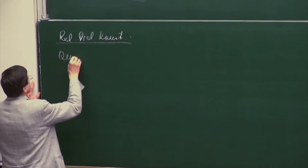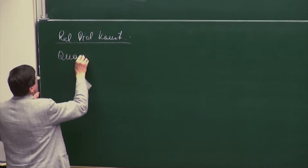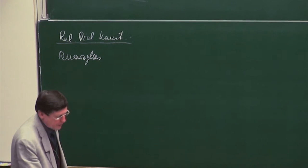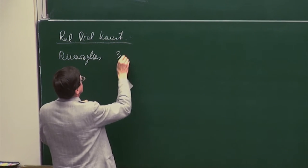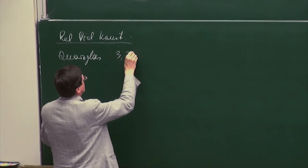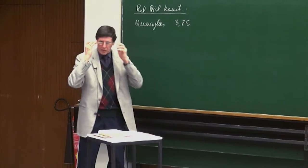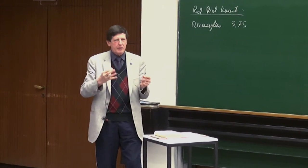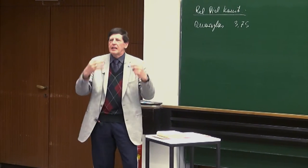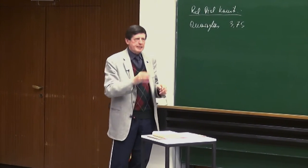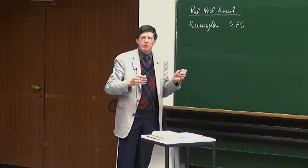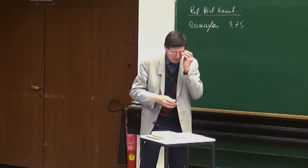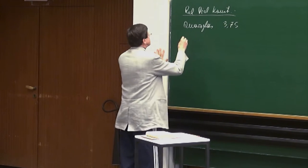Also einmal Festkörper: Quarzglas hat εᵣ = 3,75. Das ist schon was – das Feld wird um einen Faktor fast 4 reduziert. Das sind keine kleinen Phänomene, da tut sich schon was. Dann Porzellan: 6 bis 7.